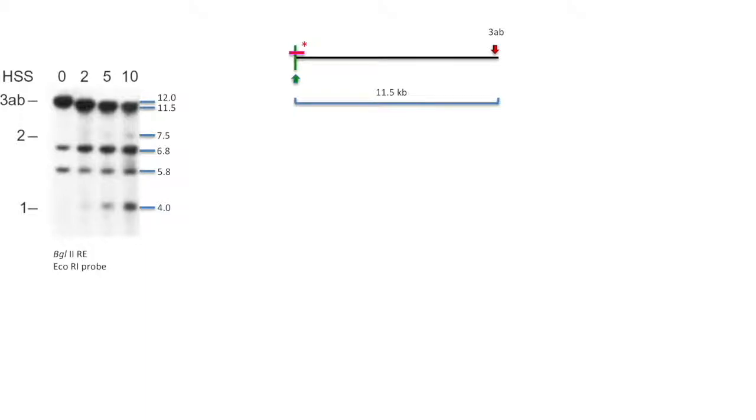If the gel is run longer, then we might be able to distinguish the two like the first experiment. The next one we barely see is 7.5 kb, which they labeled as hypersensitive site 2.